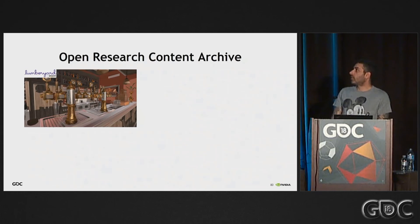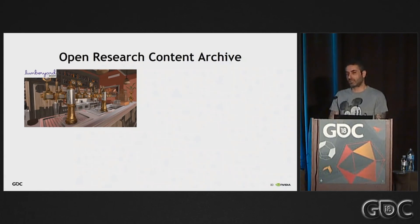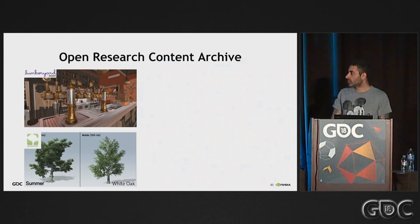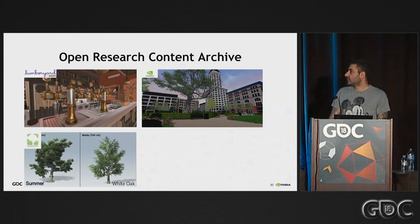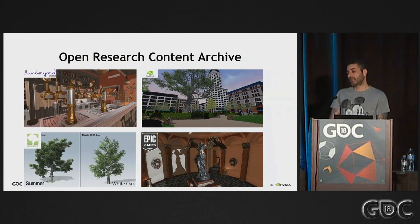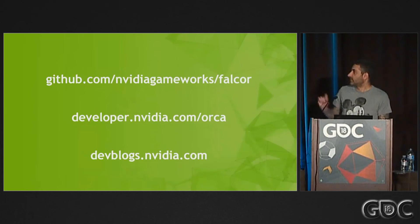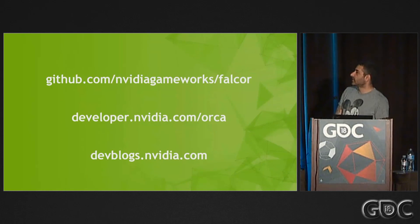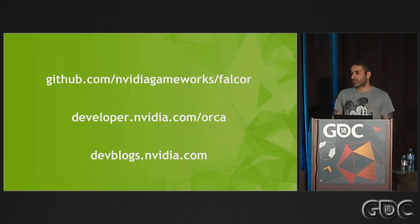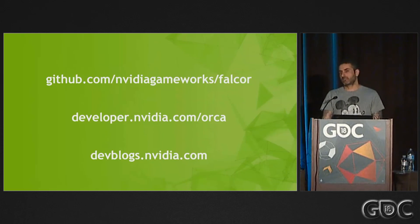One last thing — we also have something called the Open Research Content Archive, because having a good material system is worth nothing unless you can get good assets. Amazon donated the Bistro, we got some good trees from SpeedTree, our own artist created Emerald Square, and Epic donated the Sun Temple. You can go to developer.nvidia.com/orca to get those assets. And please stop using Sponza. You can get Falcor from GitHub, and there's a developer blog with more information about DXR and RTX, including a good post by Martin Stich.